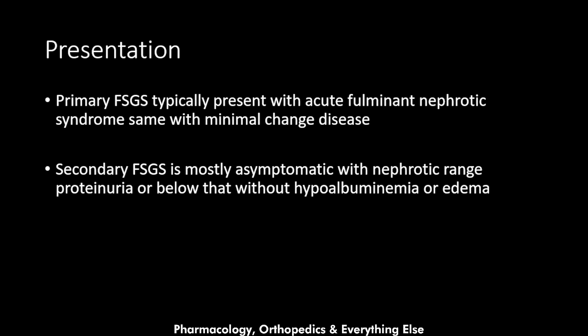Primary FSGS typically presents with acute fulminant nephrotic syndrome, same as minimal change disease — patients present with edema and hypertension with all nephrotic features. Secondary FSGS, on the other hand, is mostly asymptomatic with nephrotic range proteinuria or below, without hypoalbuminemia or edema, because less protein is lost and the body can adapt to the changes.